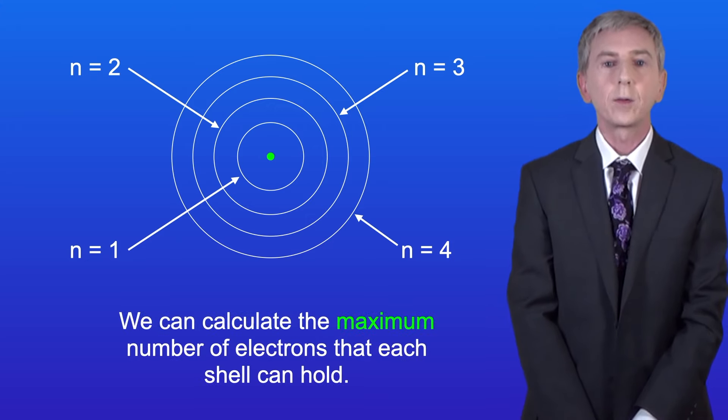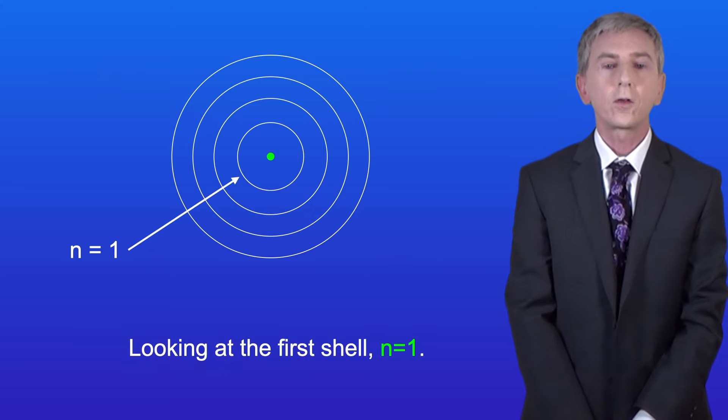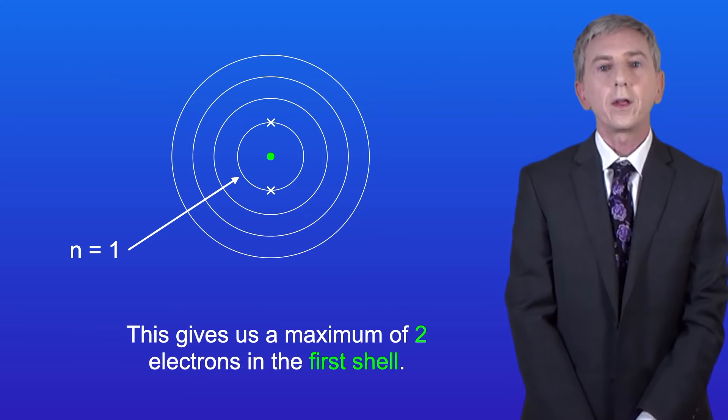Now we can calculate the maximum number of electrons that each shell can hold, and to do that we use this equation. The maximum number of electrons is two times n squared. Looking at the first shell, n equals one, this gives us a maximum of two electrons in the first shell.